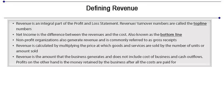Revenue is calculated by multiplying the price at which goods and services are sold by the number of units or amount sold. Revenue is the amount that the business generates and does not include the cost of businesses and cash flows. Profits, on the other hand, is the money retained by the business after all the costs are paid for. So revenue is the top line number — generated by the business — and costs or expenses are incurred by the business, and what is left over is the net worth.